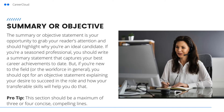Next is the summary or objective statement. This is your opportunity to grab the reader's attention and it should highlight why you are the ideal candidate. If you're a seasoned professional, you should write a summary statement that captures your best career achievements to date. But if you're new to the field or the workforce in general, you should opt for an objective statement explaining your desire to succeed in the role and how your transferable skills will help you do so. As a tip, this section should be a max of three to four concise, compelling lines.